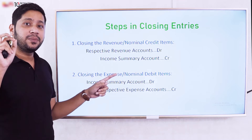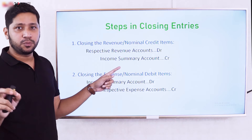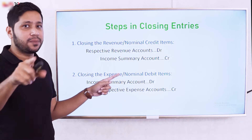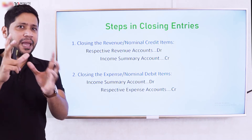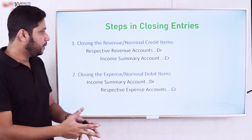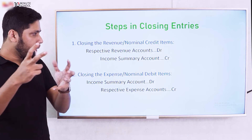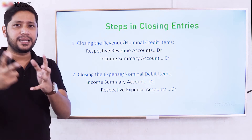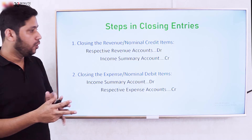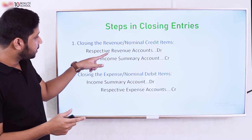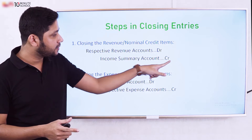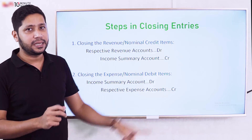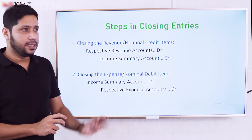Remember, the income summary is also a temporary account. For example, if we have $1,000,000 in revenue, we debit revenue and credit income summary for that amount, transferring the revenue balance into the income summary.